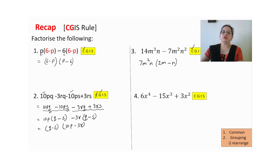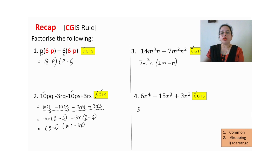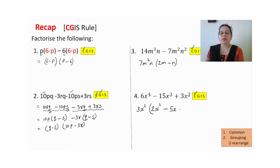Again factorize — first step, common. Numbers 3, 15, and 6 all share factor 3, so take 3 common. Powers are 4, 3, and 2 — 2 is the smallest, so take x² common. Inside the bracket: 3 twos are 6, power 4 minus 2 gives x²; then minus 15, power 3 minus 2 gives x (we don't write 1); plus 3 ones are 3, x² divided by x² leaves 1. So this is how we find the common factor.